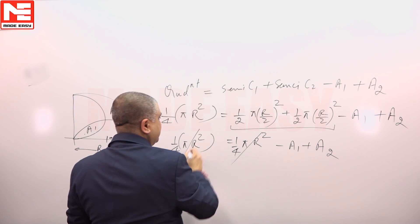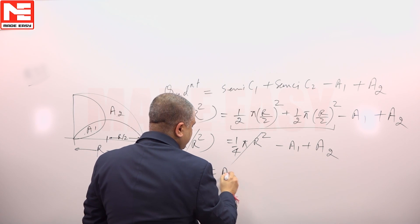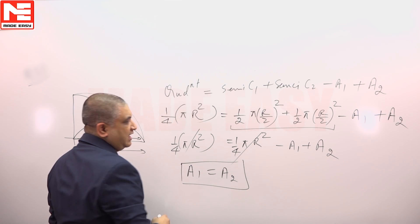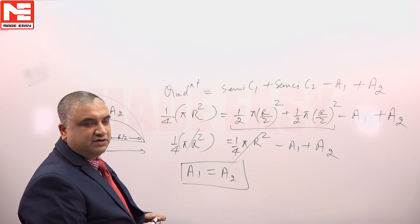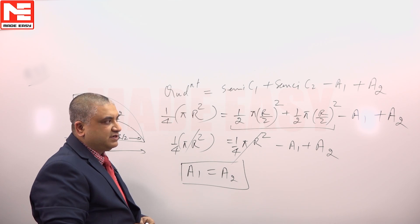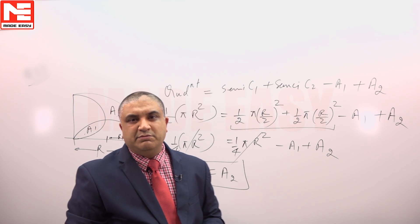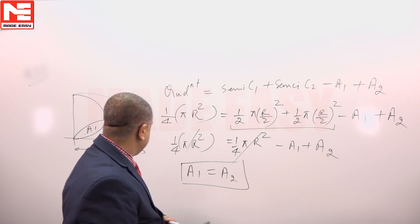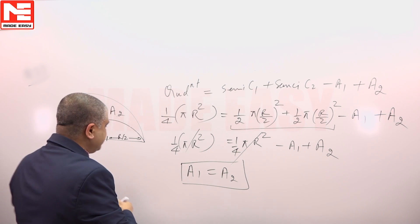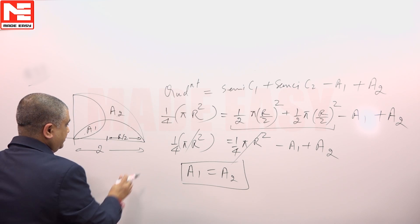So we know a1 is equal to a2. a1 will equal a2 irrespective of the radius r — we can get the result that a1 = a2 for any radius. Things would have been fairly simple had we taken the radius as 2 units.